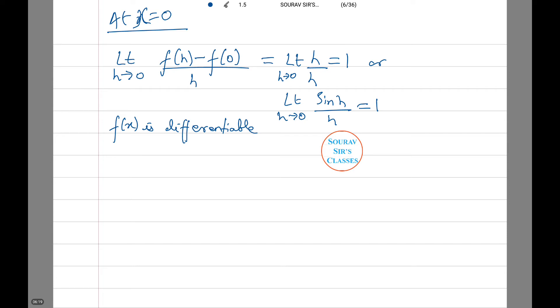Now, we do the same for g(x). Limit h tends to 0 of [g(h) minus g(0)]/h, which equals limit h tends to 0 of [h sin h sin 1/h]/h, equals 0.